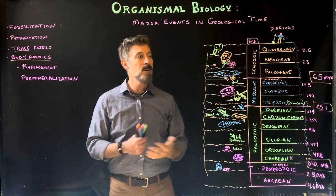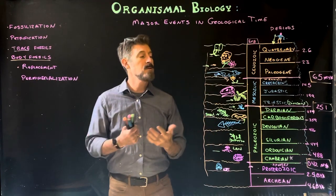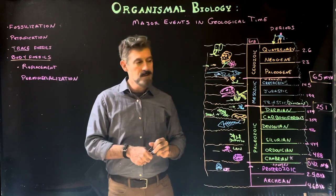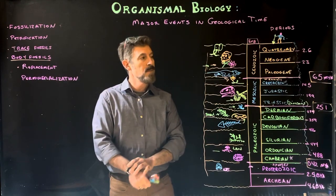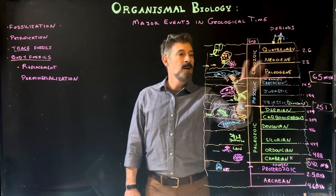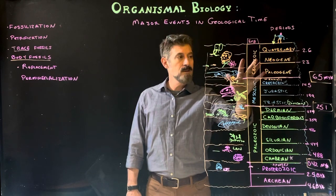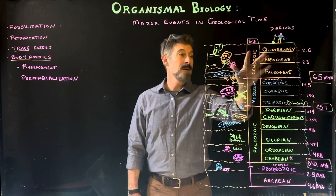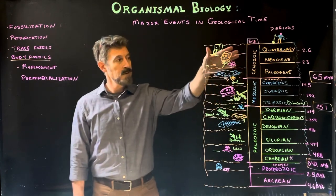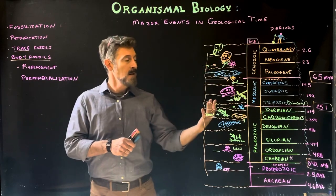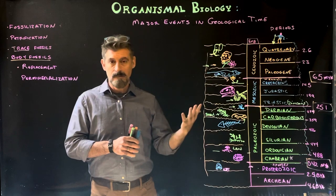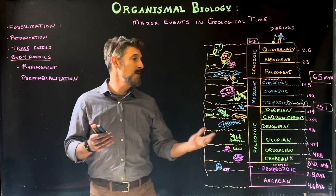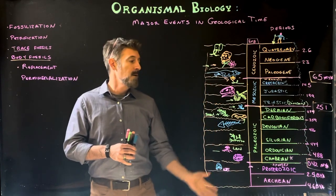In the Cenozoic, mammals really start to take over. Angiosperms—flowering plants—come on the scene and become increasingly dominant, spreading seeds in ways different from gymnosperms, which we'll get into in the plant biology section. We also start to see the first bipedal mammals and hominid ancestors in the Neogene. Then in the Quaternary period we see an ice age—some mammals go extinct, others diversify—and we start to see the first ancestors of humans.